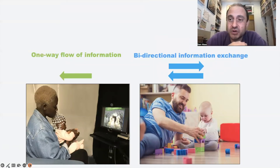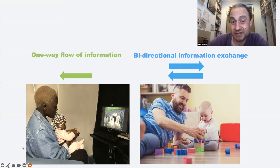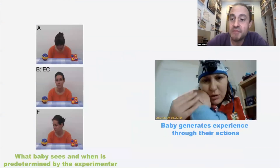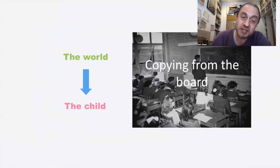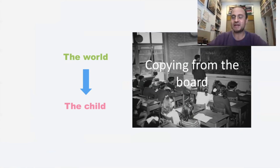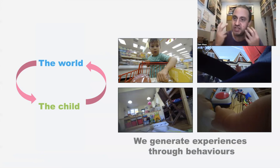Another more fundamental problem is that the ways we're measuring brain function in these experimental tasks are all about a one-way flow of information from the screen to the child. Whereas there's a lot of evidence now that that's not how learning works. Learning is about a bi-directional exchange of information — the baby generates experience through their actions. It's not just the case that, as in an experimental task, everything we see and experience is determined by someone else. Most historically, research into learning is all about how stuff happens outside us and we passively perceive it. But in fact, that's not how we interact with the real world. We generate experiences through our behaviours — what I do determines what information reaches my sensory organs. And that's the type of thing that experimental paradigms find it very hard to measure.